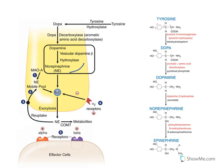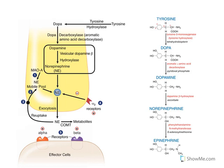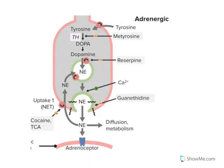One more important point: dopamine beta-hydroxylase enzyme is present inside the vesicle itself. Even though synthesis occurs before storage, this final hydroxylation step happens within the vesicle — which is why it is referred to as vesicular dopamine beta-hydroxylase.